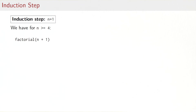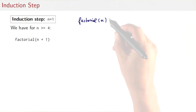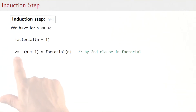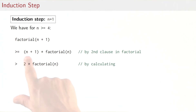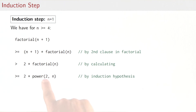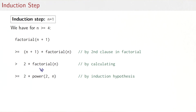For the induction step, we assume the property holds for n: factorial(n) ≥ 2^n. We have to prove the same for n+1. Factorial(n+1) equals — or here widening to greater or equal — (n+1) * factorial(n), because that's how factorial is defined. That is definitely greater than 2 * factorial(n), because n ≥ 4 so n+1 ≥ 5. By the induction hypothesis, 2 * factorial(n) ≥ 2 * 2^n.